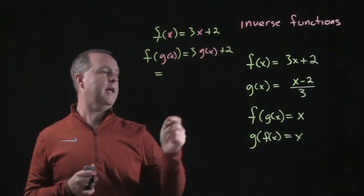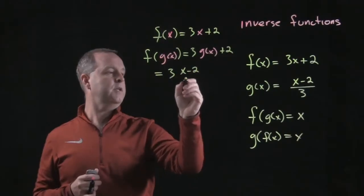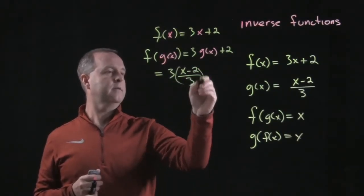g of x in this particular case says 3 times g of x, which is x minus 2 over 3 plus 2.